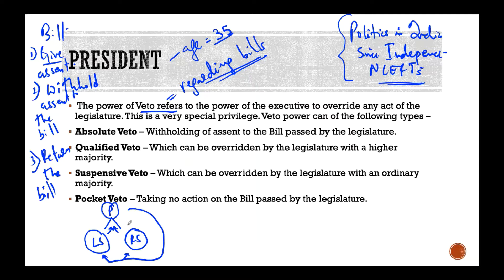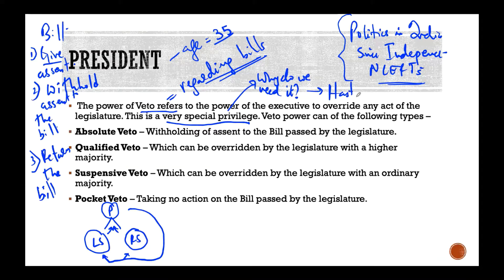Now we'll take a look at the kind of terms we talk about in veto powers. First of all, why do you need veto? This is a very special privilege. We need the veto power to ensure that there is no hasty or ill-considered legislation, and to ensure that there is no unconstitutional legislation — legislation against the principles of the Constitution.